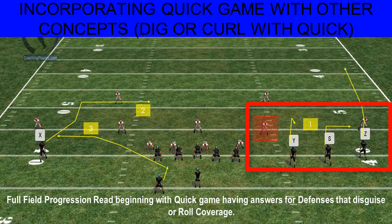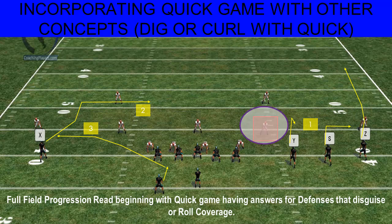This is an example of stick on one side with leg breakers on the other side — a dig flat concept. The quarterback will pre-snap take a look at the outside linebacker. If we are uncovered — one outside linebacker versus two of our slots — we're going to start the readoff on that side.